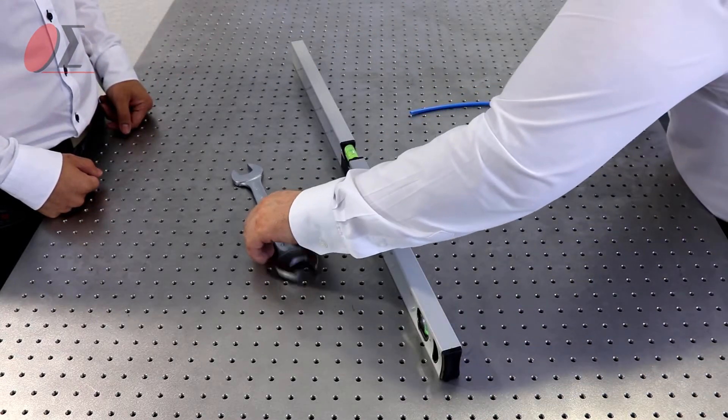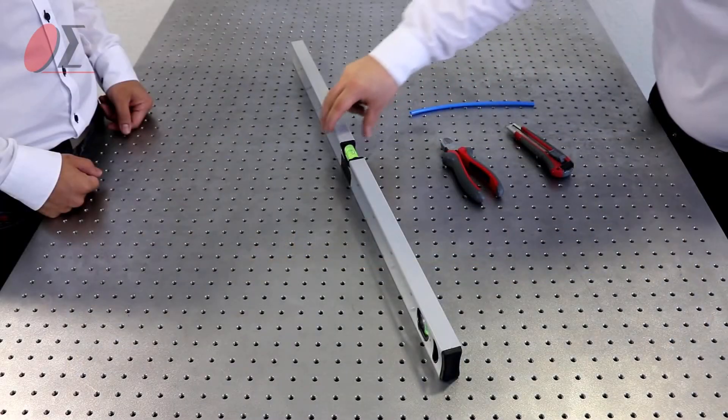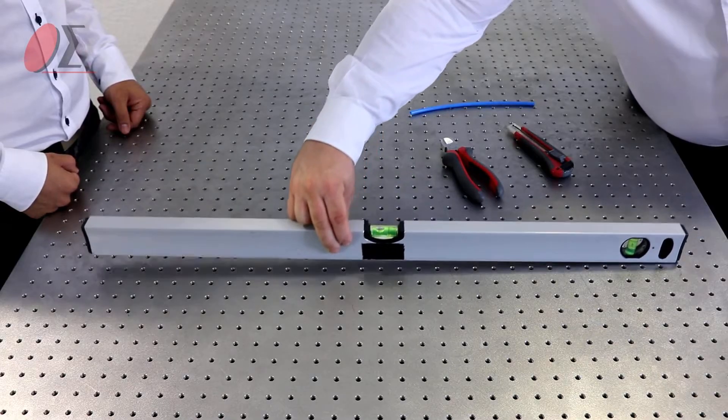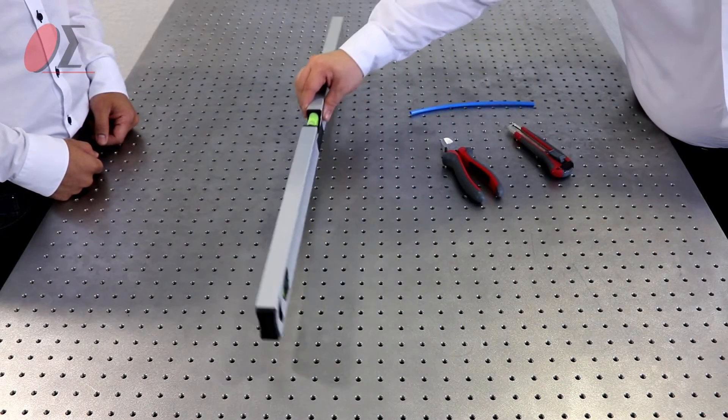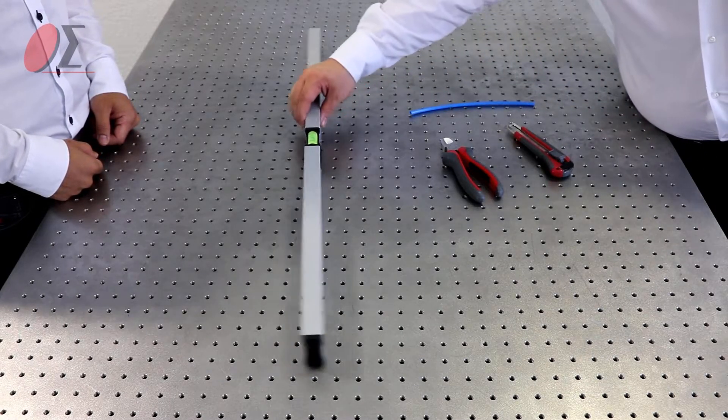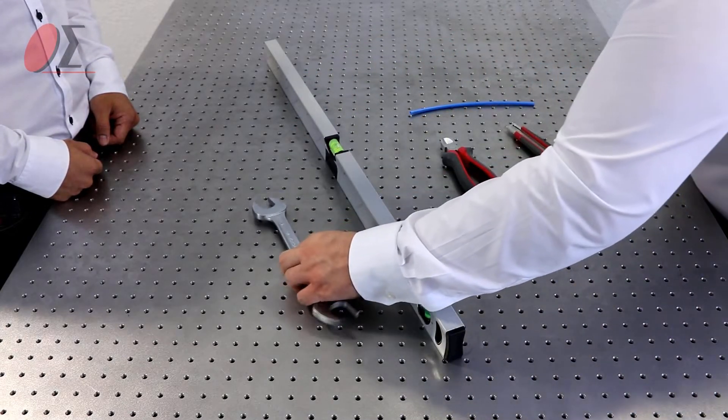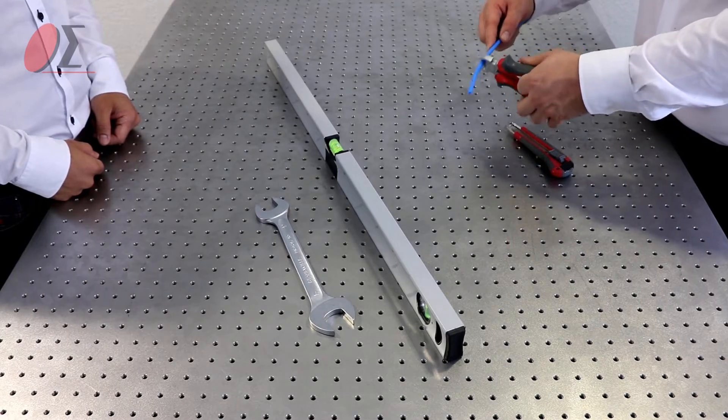We're using the wrench to adjust the isolator. You're checking this with the level, so make sure you check this in X and you check this in Y direction. Make sure the optic table is well leveled. Here's the cutter and with this we can easily shorten the air pipe.